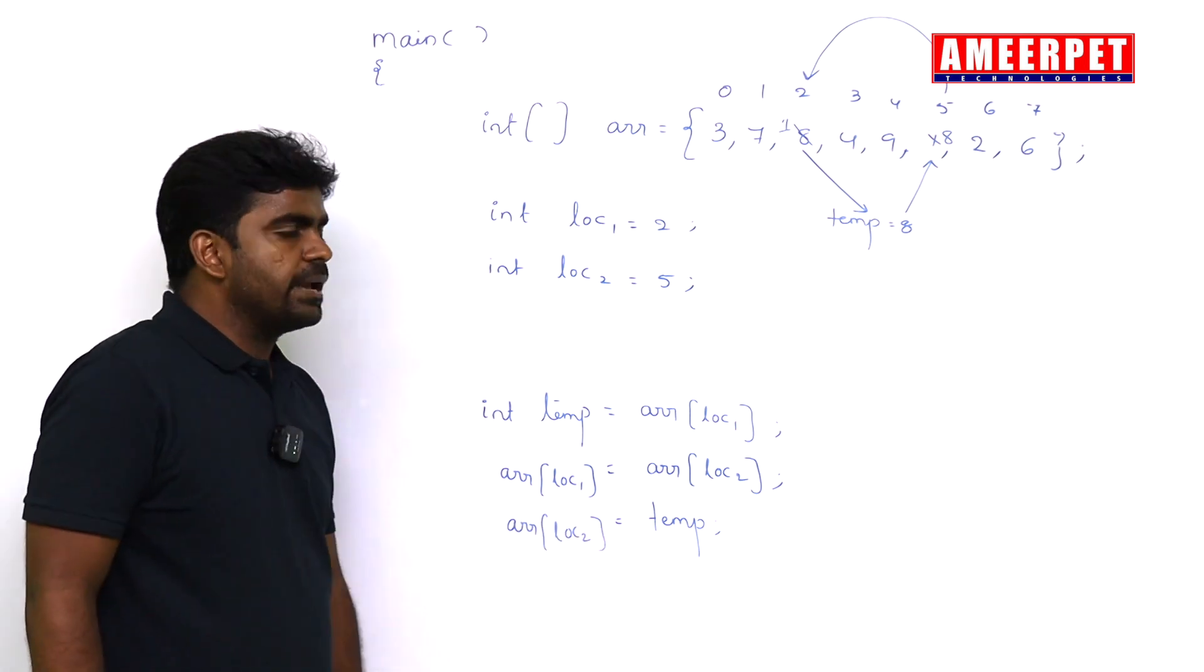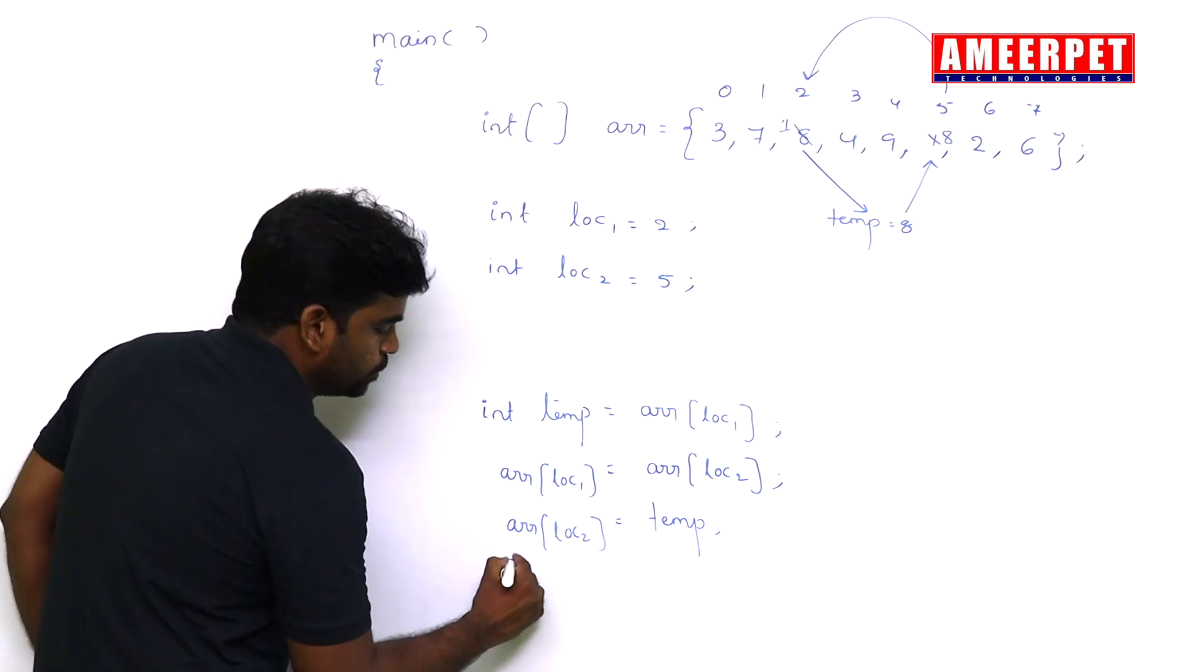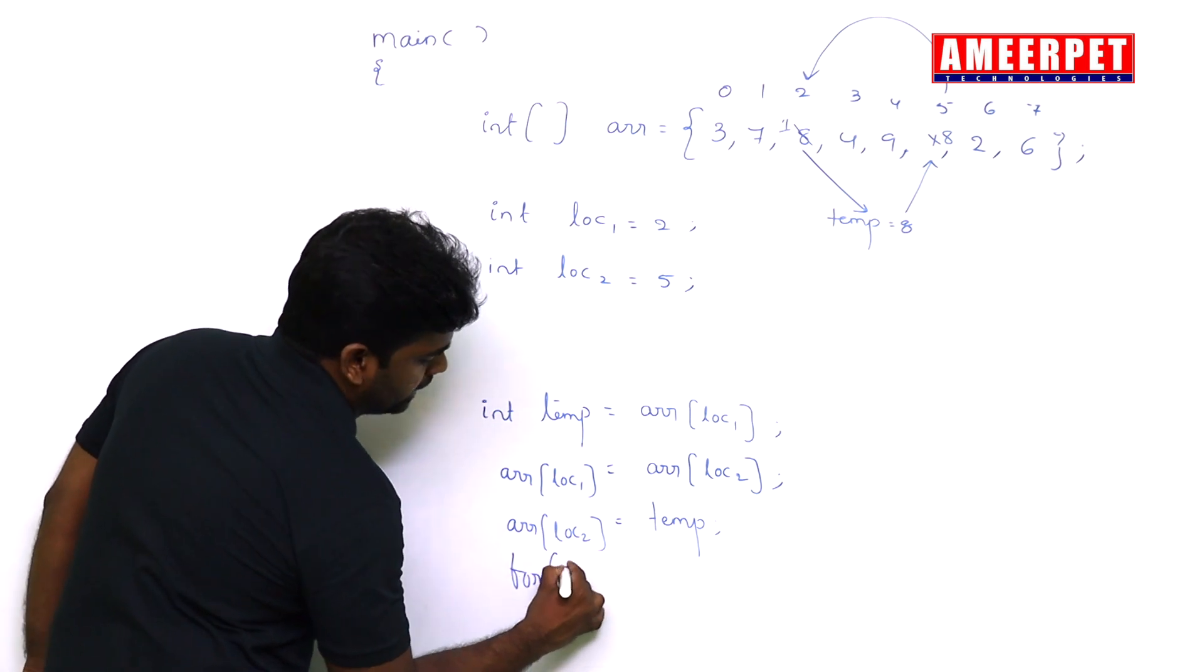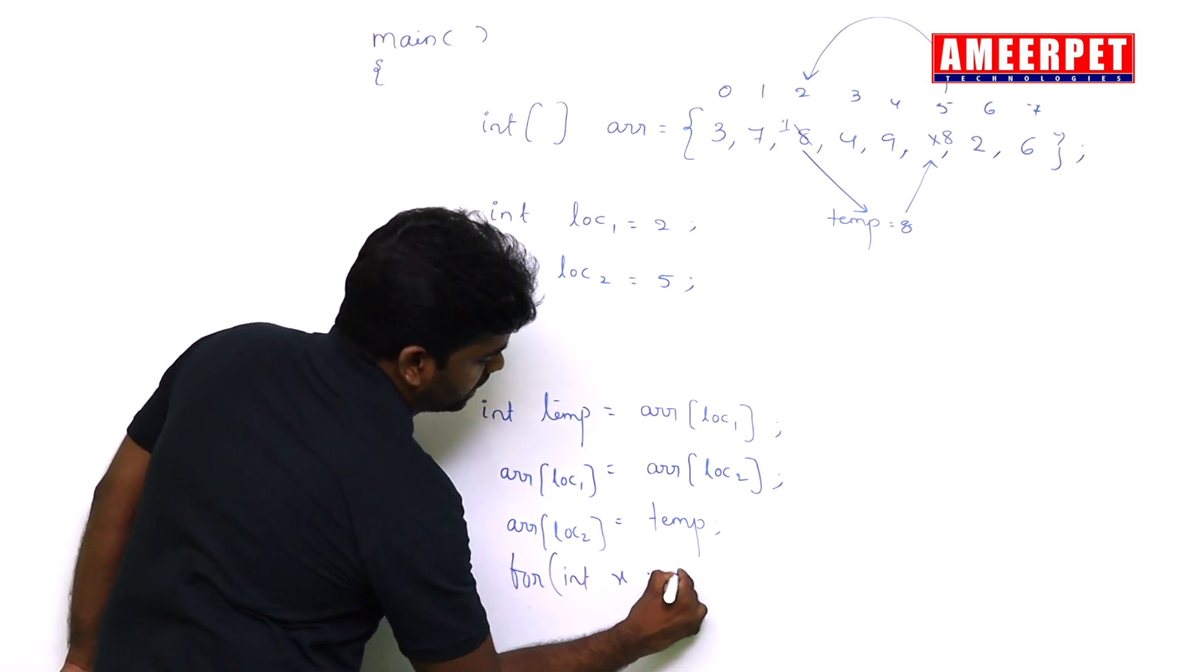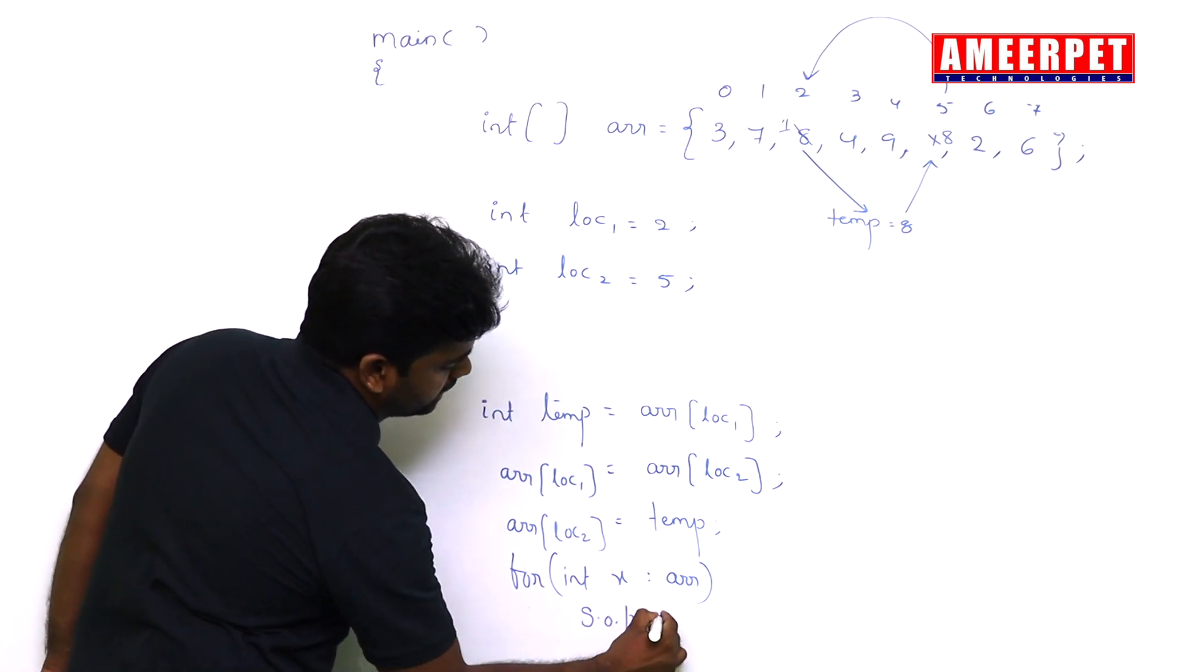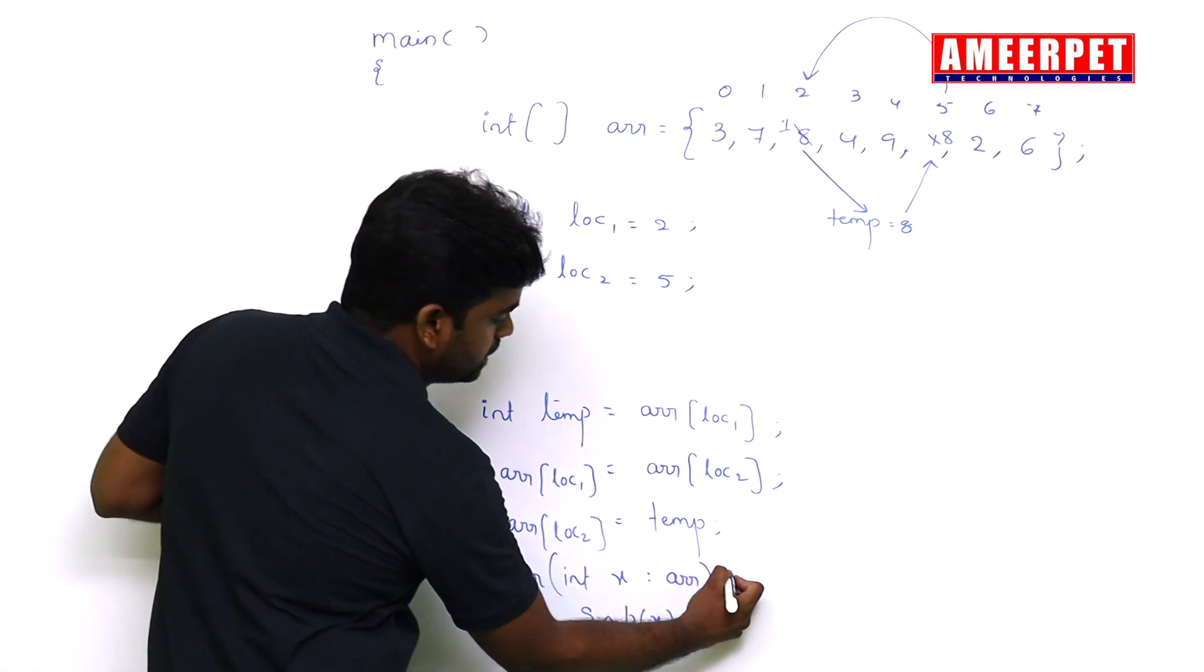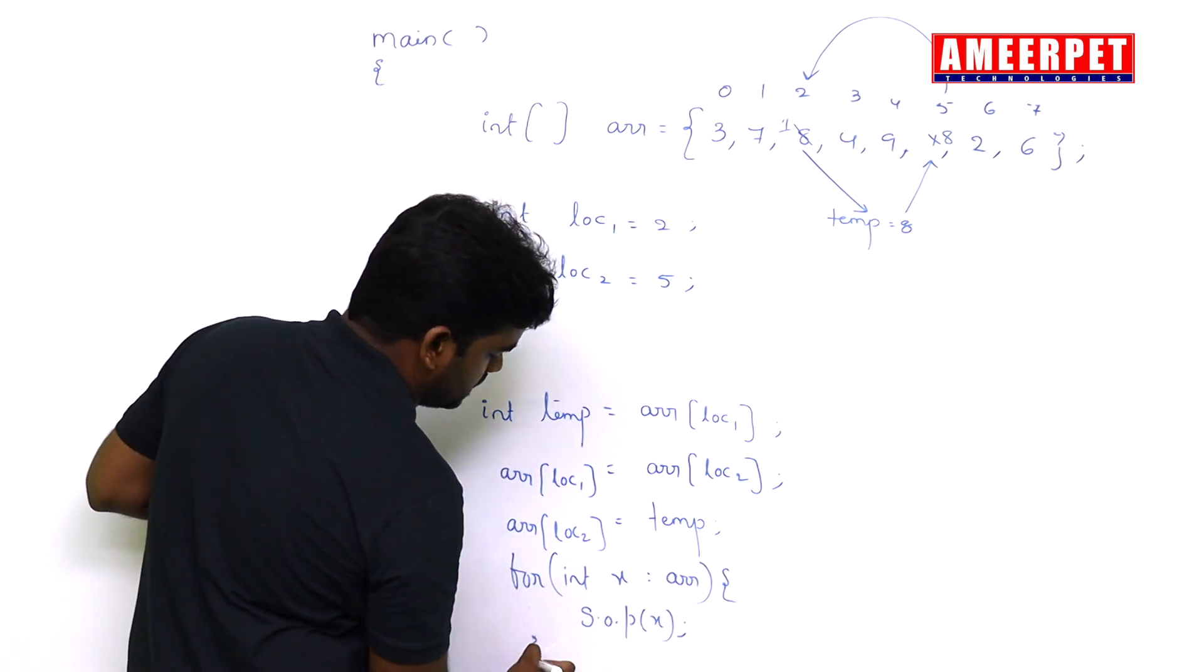But after swapping, how can we check these elements got swapped or not? Simple, using the for each loop, integer x, ARR and print system.out.println x. With the swapped elements, values will display. If you want to put it in braces, you can.